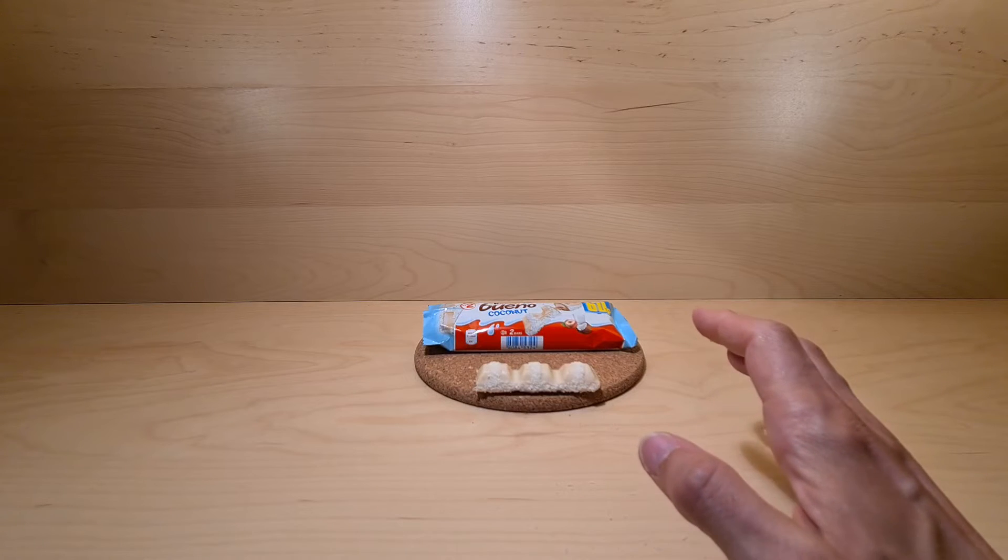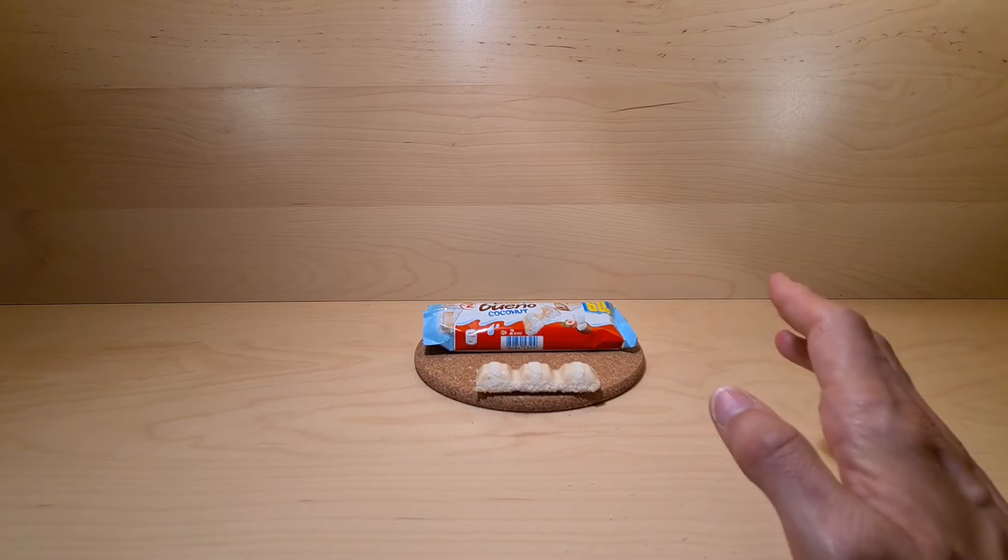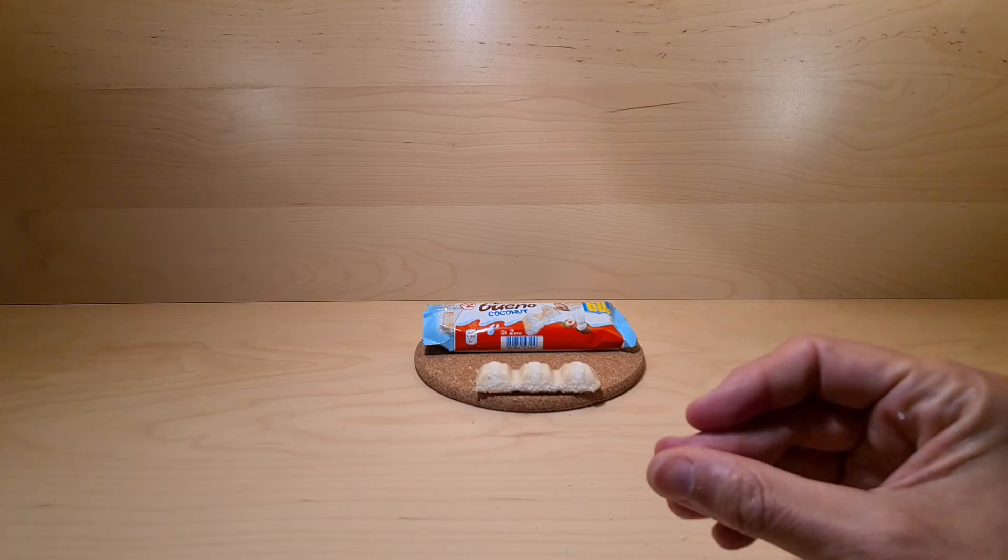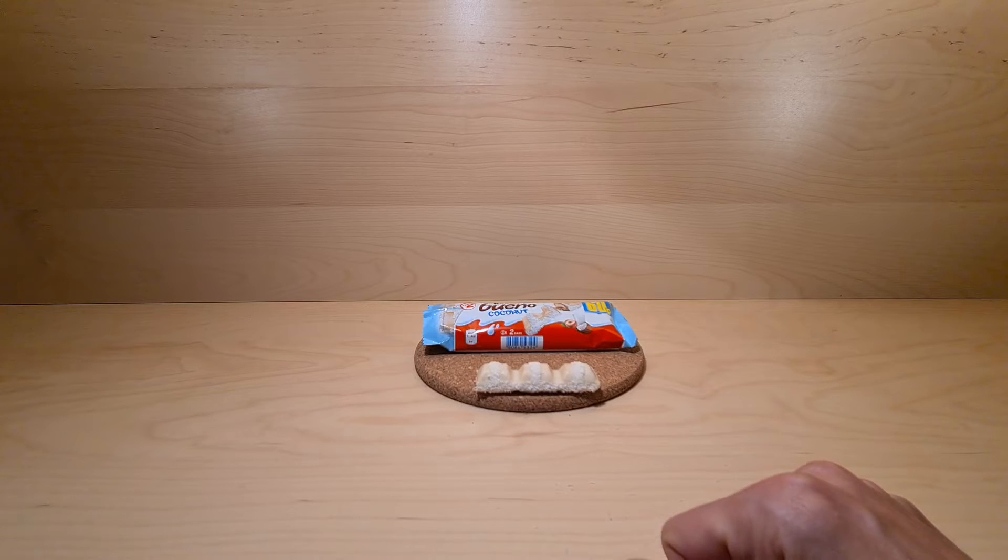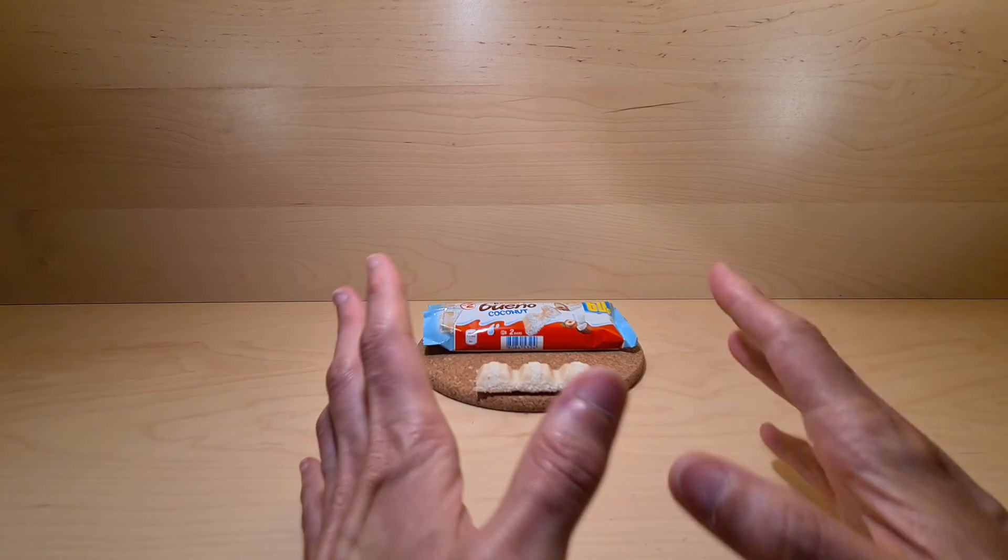So the first thing you get is the coconut. Obviously. Then it's literally just a combination of being a white chocolate Bueno and coconut. It's a double score. Double score indeed.